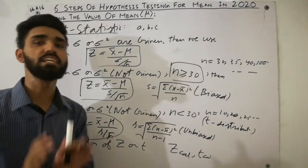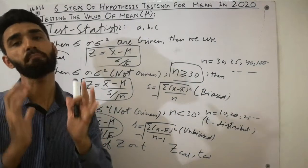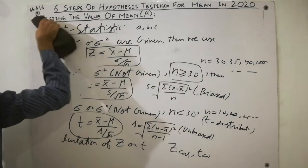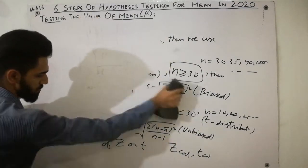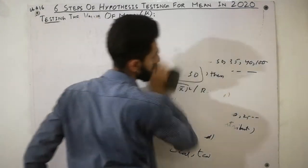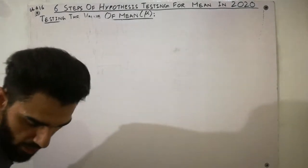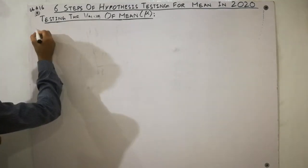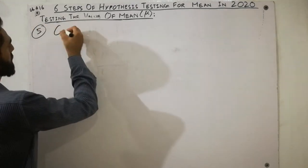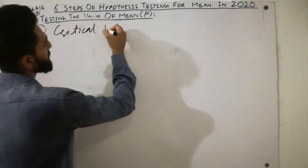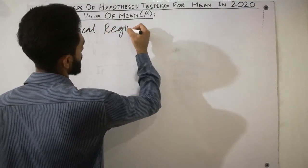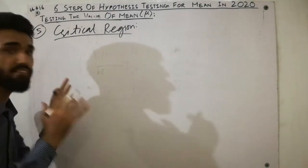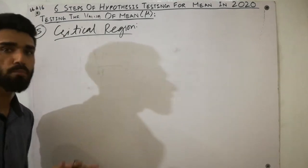Step five is the critical region, which is the main and very important topic. The critical region determines the endpoint of our decision. This is a very important step in solving any hypothesis testing problem.